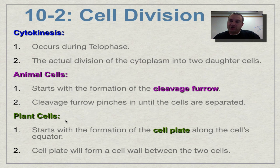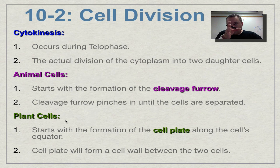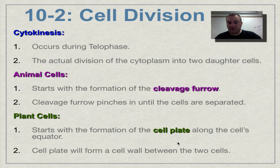Now in plant cells, we have the cell wall that's in the way and we have to basically create a new cell wall between the daughter cells. In the beginning, this new cell wall is called the cell plate.